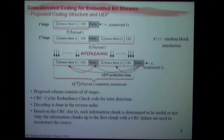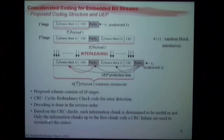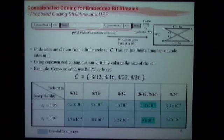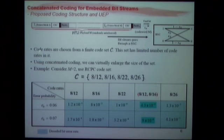Decoding is done in the exact reverse order. Based on the CRC check, each information chunk is determined to be useful or not at the receiver after the channel. You decode them, and using the CRCs, you determine if the associated source block is useful at the decoder. After M stages, the bit stream goes into a binary channel with crossover probability epsilon sub zero — the simplest channel model. The code rates are chosen from a finite code set C, which has a limited number of code rates.